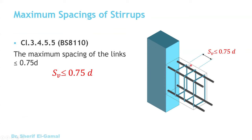The last requirement is for maximum spacing between stirrups. The spacing S_v must be less than or equal to 0.75d, which is 75% of the effective depth of the beam. If you calculate a spacing greater than 0.75d, you must reduce it to 0.75d.